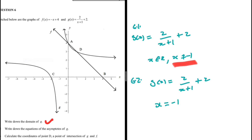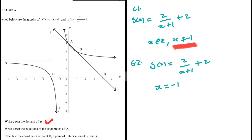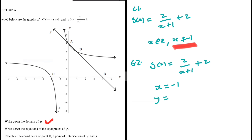The function gets very close to x = -1 — at x = -0.9999 the function is defined, but as soon as we reach x = -1 it is no longer defined. That is the asymptote: the point we get very close to but never actually touch. So x = -1 is one asymptote. The other asymptote is y = 2.